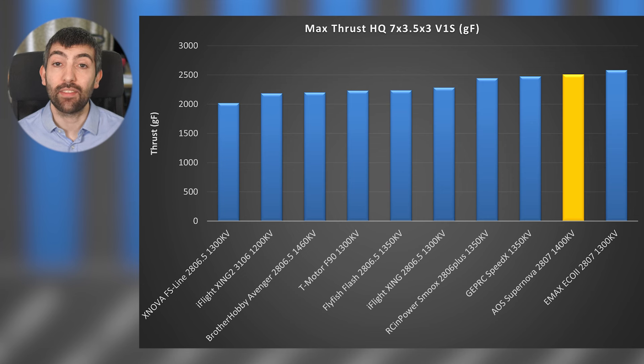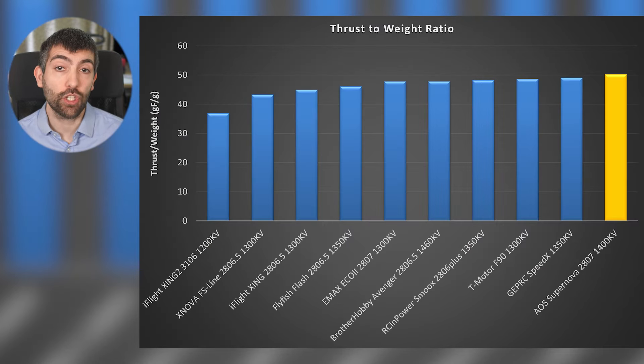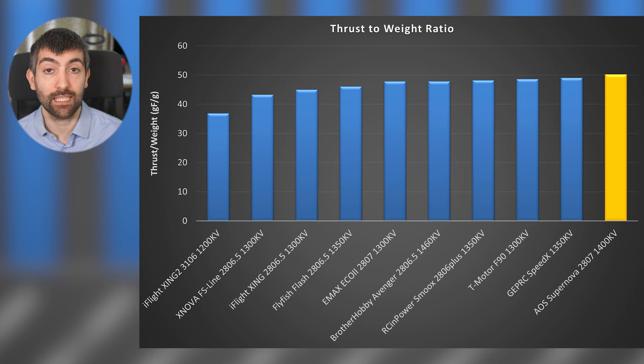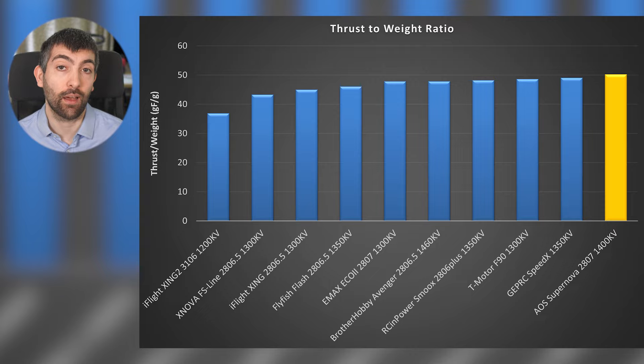Looking at the chart, we can see that the Supernova 2807 delivers just over 2.5 kilos of thrust on my 7x3.5x3 test prop, and that places it second just behind the Emax Eco 2. Now, of course, this chart doesn't take the motor weight into account, and if we look at a chart of thrust-to-weight ratio, we can see that the Supernova moves ahead of the Emax Eco 2 because it produces very nearly the same thrust at a significantly lighter weight.